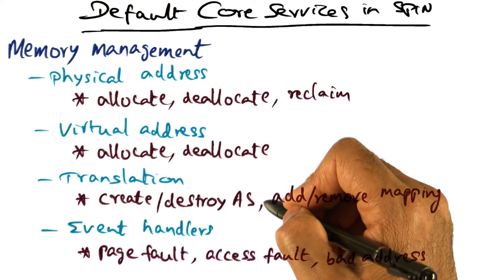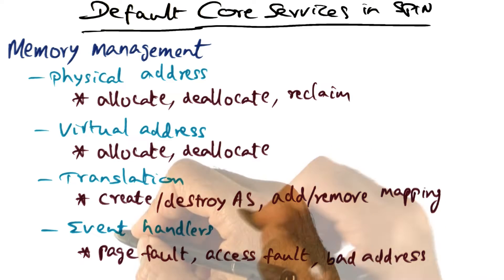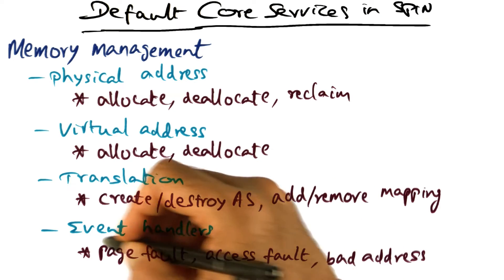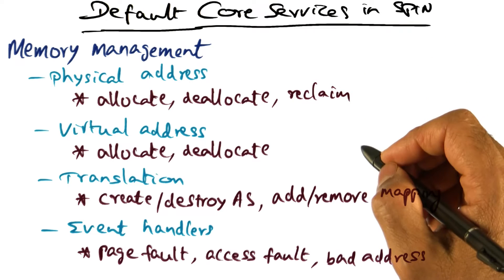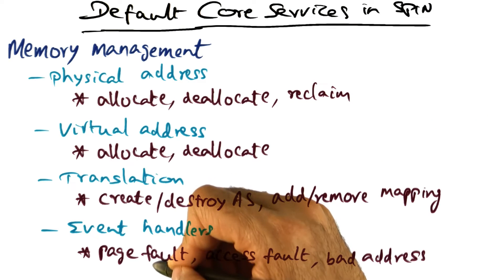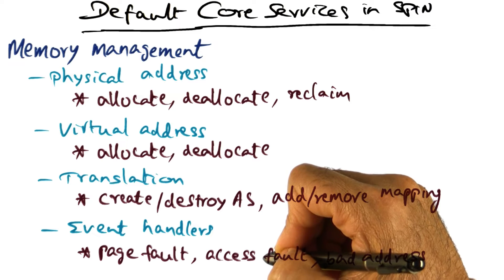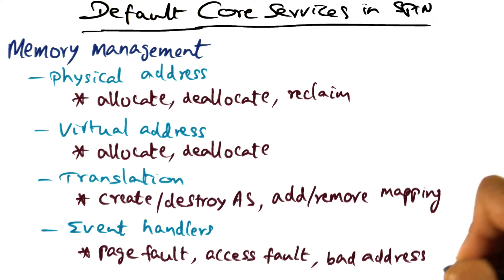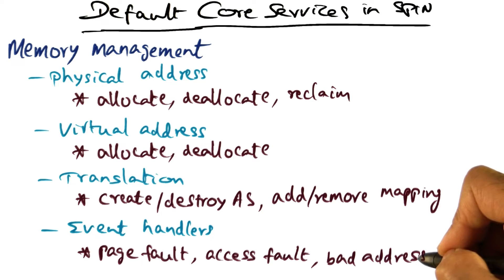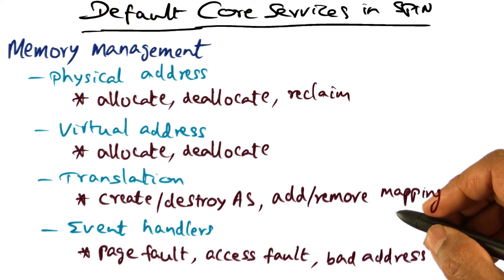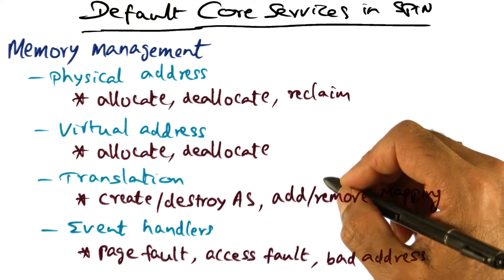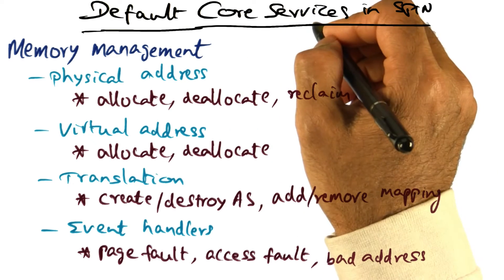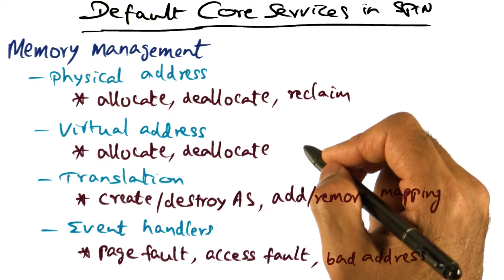And because of what we said earlier about over-commitment of memory, not all of a process's address space is going to be fitting in physical memory. So there are event handlers provided as part of the core service of Spin for handling page fault, access fault — meaning if you have a page that is write protected and a process tries to write to it, that's an access violation — or if a process is trying to access a region of memory that it doesn't have access to, generating a bad address exception. All of these are interface functions defined as core services of memory management in the Spin operating system.